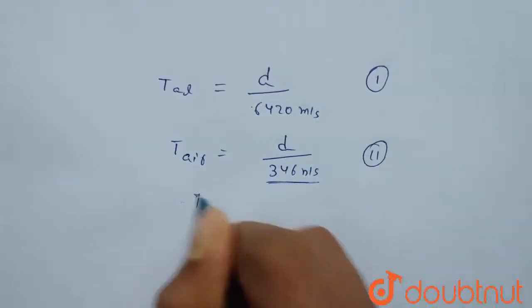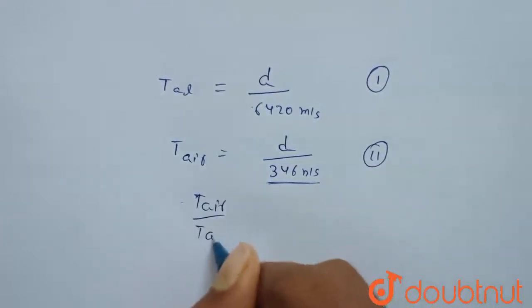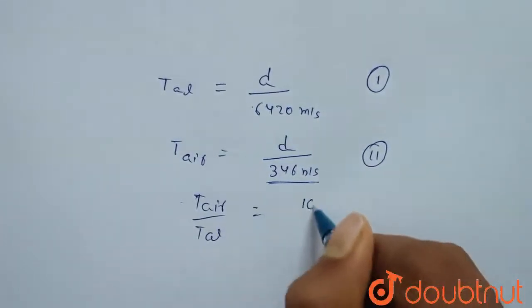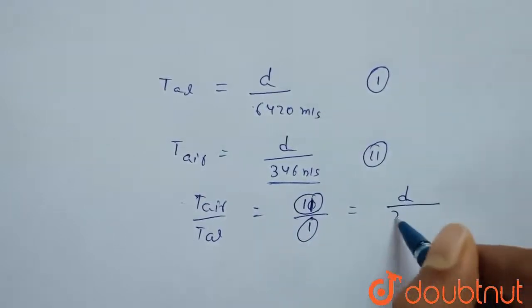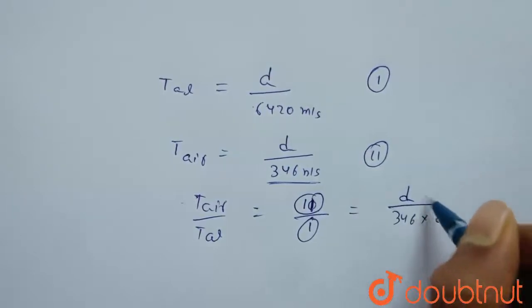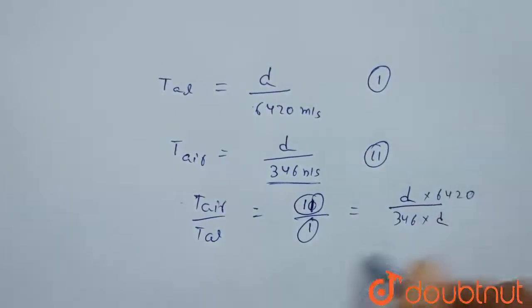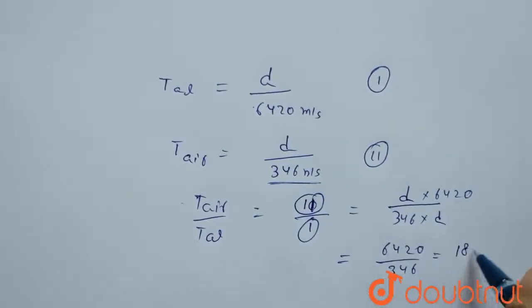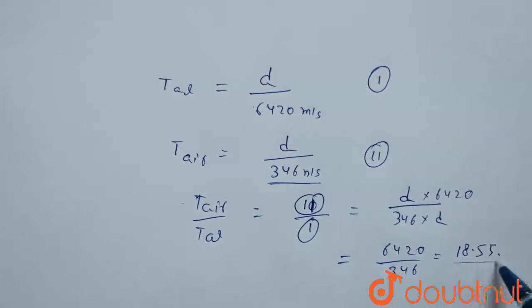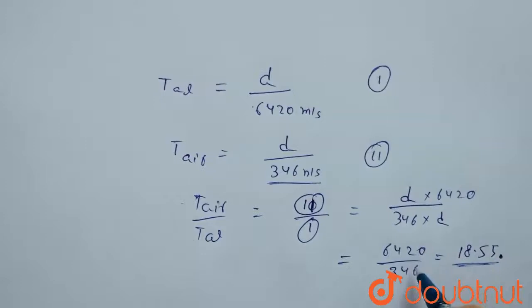So we have to find T_air upon T_al. So what we will do we will divide equation 2 by equation 1. So D upon 346 divided by D upon 6420. So this is 6420 upon 346 which is 18.55. So this is ratio of time taken in air and time taken in aluminium.